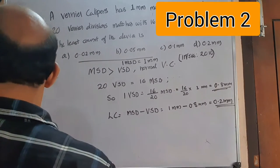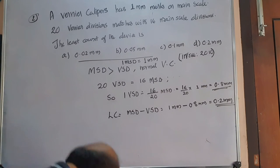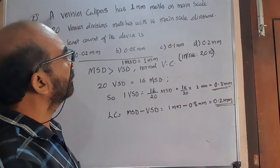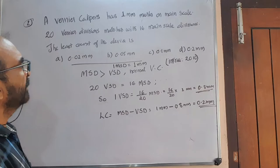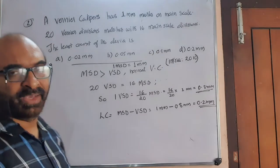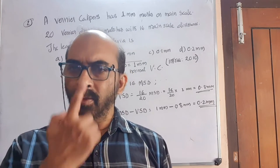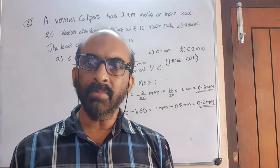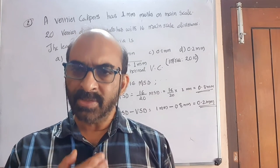Second question: A vernier caliper has 1 millimeter marks on the main scale. 20 vernier divisions match with 16 main scale divisions. The least count of the device? Four options are given. It is not at all different from the previous type of question. Here, the numerical values are given whereas in the previous question N and A were given. That's the only difference. You have to remember: number of vernier scale divisions and main scale divisions need not always differ by one — here it is 16 and 20.